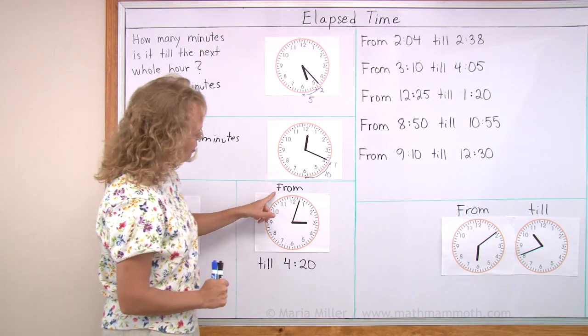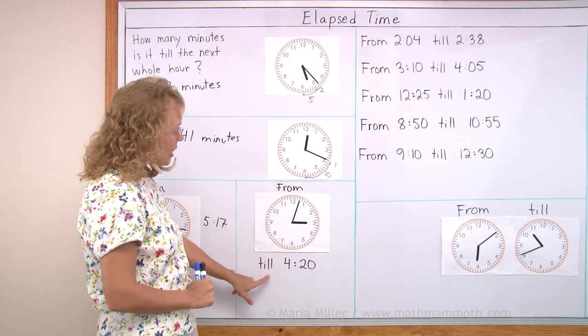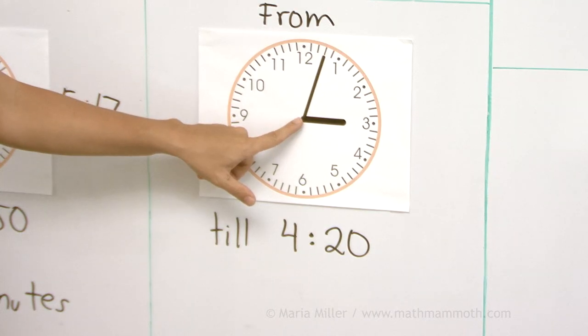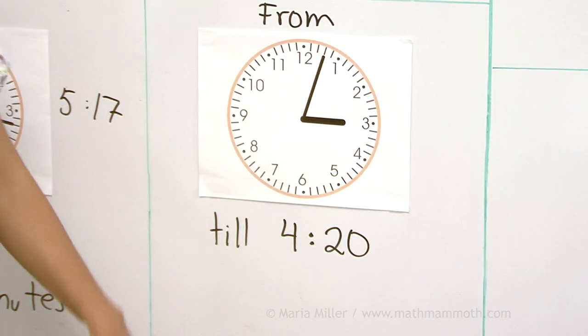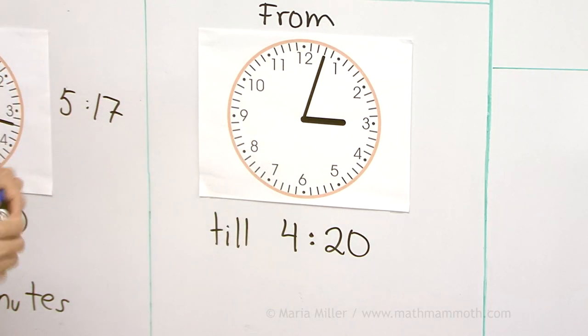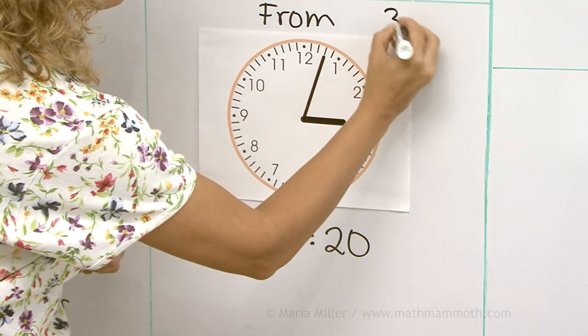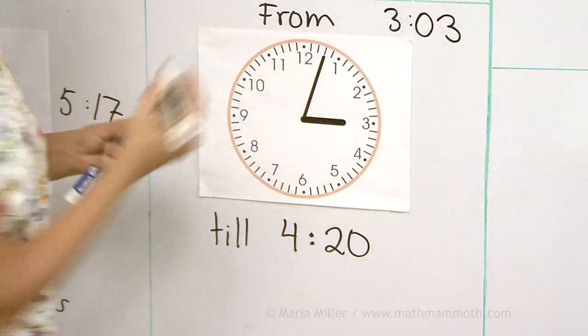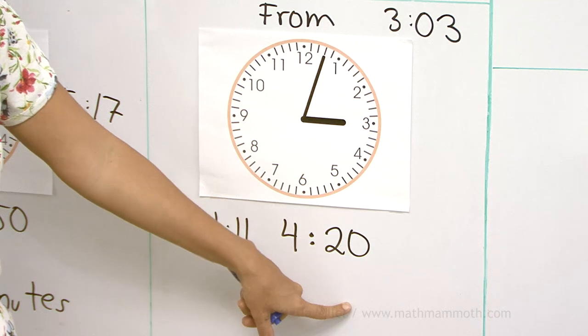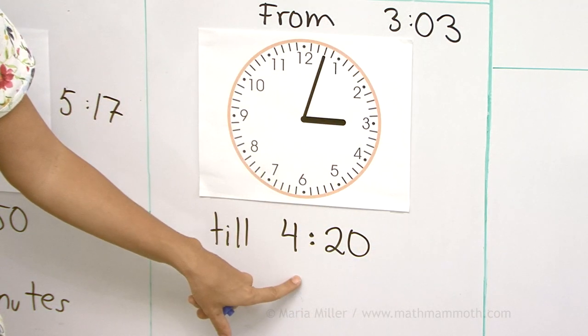Next one. From this time till 4:20. Now this time here, we just studied that in our last lesson, it is 3:03. Let me write it over here. 3:03. Until 4:20, notice that the hour changes now. Three hours, four hours.